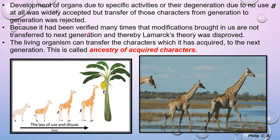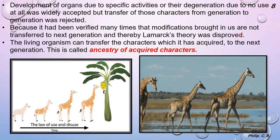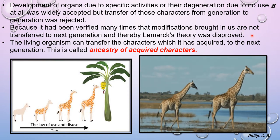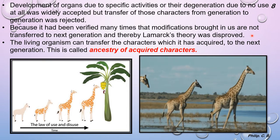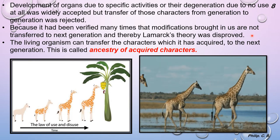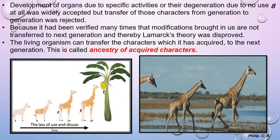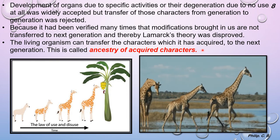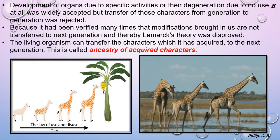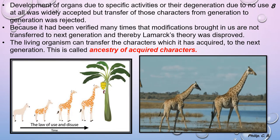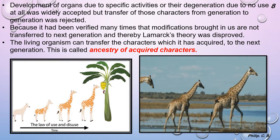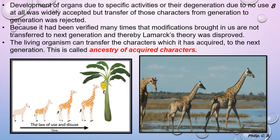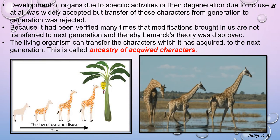It has been verified many times that modifications brought in us are not transferred to the next generation, and thereby Lamarck's theory was disapproved. The concept that living organisms can transfer acquired characters to the next generation is called ancestry of acquired characters — whatever the ancestors were doing for a long period, certain features were said to pass from one generation to the other.